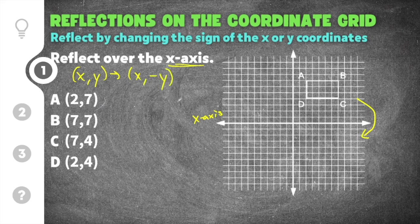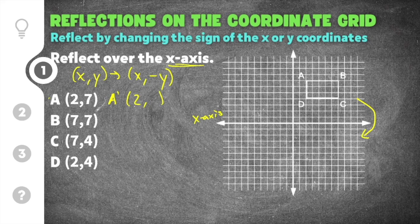We need to find A prime, B prime, C prime, and D prime. For A prime, A is (2, 7): the x-coordinate stays 2, and the y-coordinate changes from positive 7 to negative 7. B prime: the x stays 7, and positive 7 becomes negative 7. For C prime, the x stays 7 and the y switches from positive 4 to negative 4. For D prime, the x stays 2 and the y goes from positive 4 to negative 4.